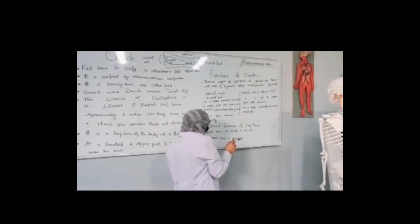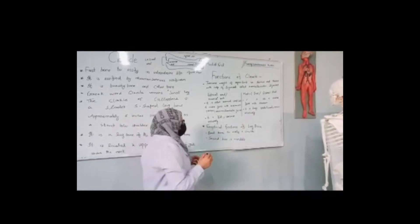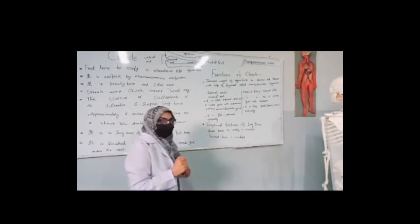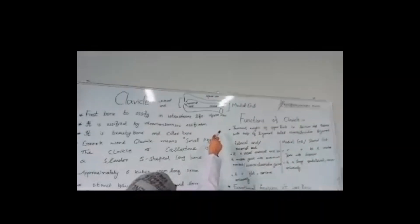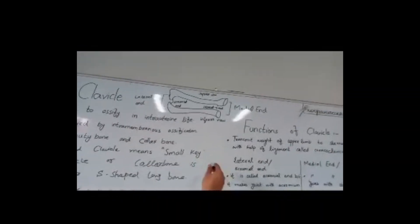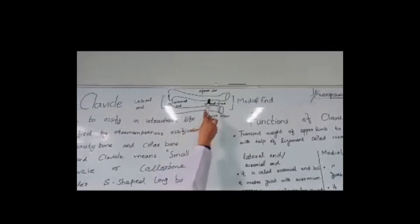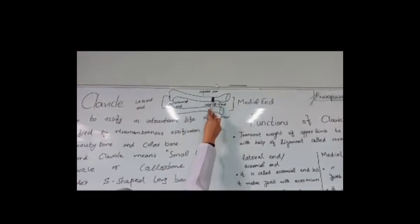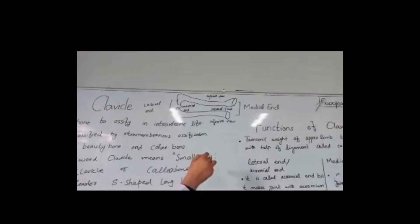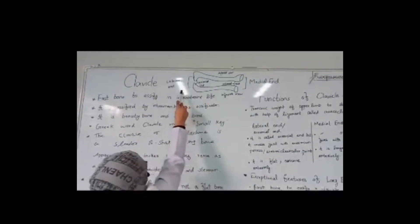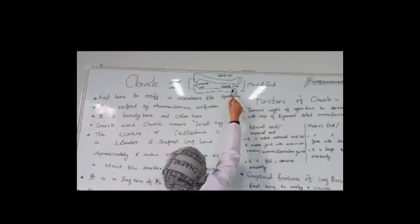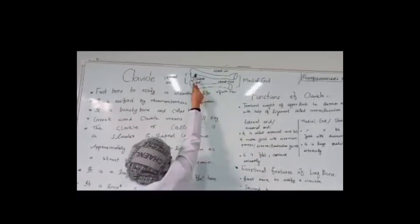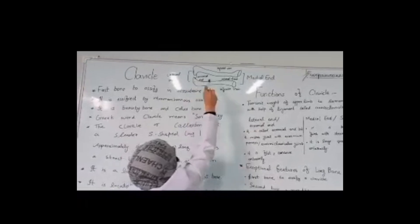Exceptional features: the clavicle is the first bone to ossify and the second bone to be vulnerable to fracture. This diagram shows the superior and inferior views of the clavicle. The medial end connects to the sternum and the lateral end is the acromial end.